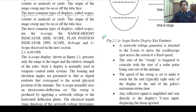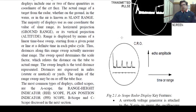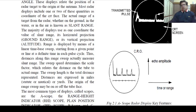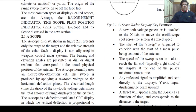The A-scope display is shown in figure 2.1. This is the CRT screen — cathode ray tube screen. This shows the transmitted pulse and the target echo. The echo amplitude versus range is shown in this circle, representing the A-scope data display.